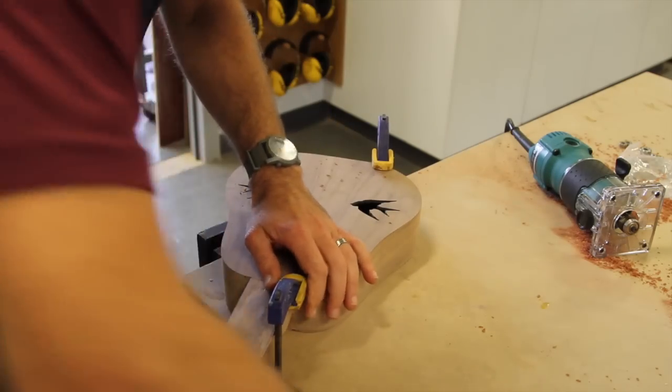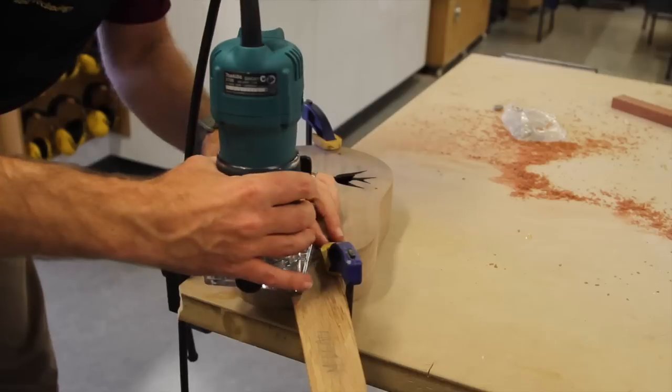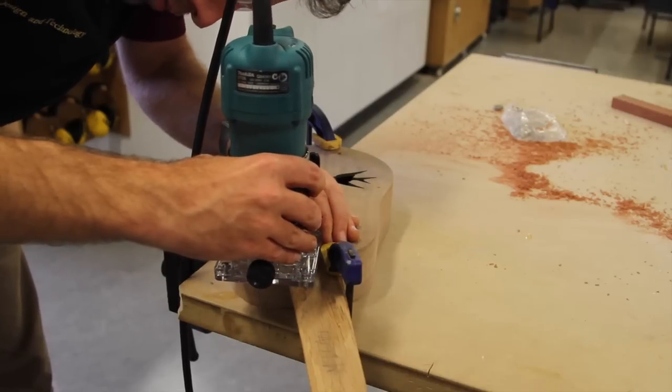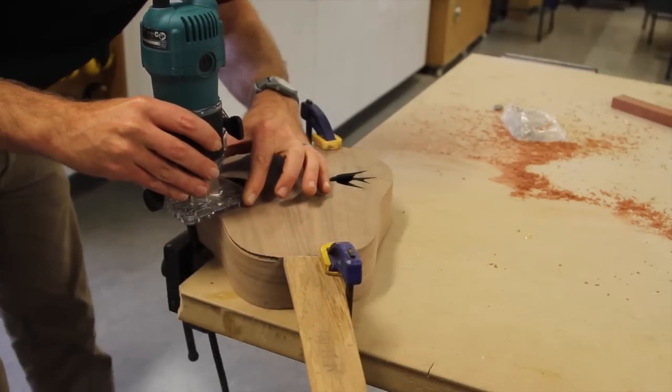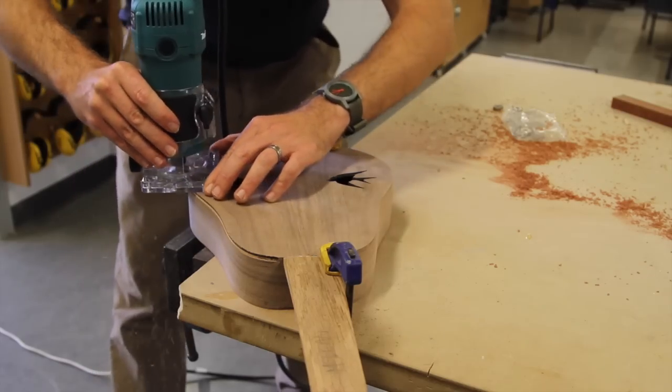Clamp your instrument to a bench, check for clearance on the clamps, and then you can begin routing. You should note that this setup is for a flat soundboard rather than a radius soundboard. If you're using a radius soundboard, you would need to use a side guide on the trimmer.